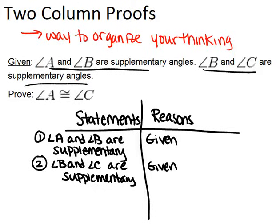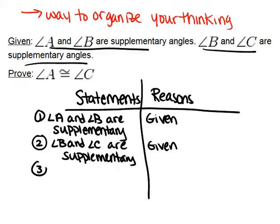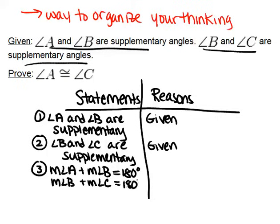Now you have to do some thinking: if you know that these two pairs of angles are supplementary, what does that tell you? If you remember the definition of supplementary angles, it says they are two angles that add up to 180 degrees. So the next thing to write is that the measure of angle A plus the measure of angle B equals 180 degrees, and similarly, the measure of angle B plus the measure of angle C also equals 180 degrees. The reason is the definition of supplementary angles.